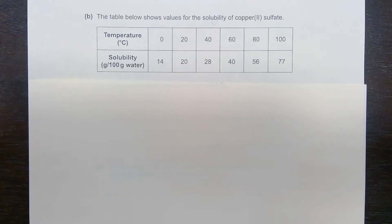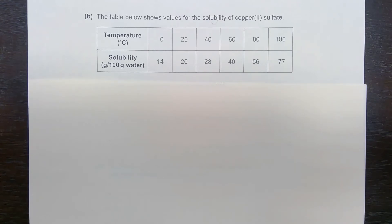Here is a question that we will be considering. The table below shows values for the solubility of copper 2 sulfate. We have various temperatures in degrees Celsius, and for each temperature we have the corresponding solubility of the copper 2 sulfate in the water. As you can see, solubility has complicated looking units — grams per 100 grams of water.